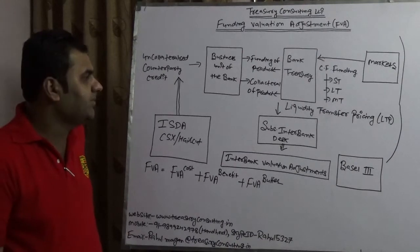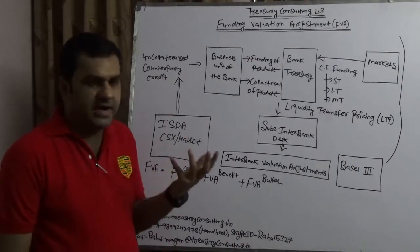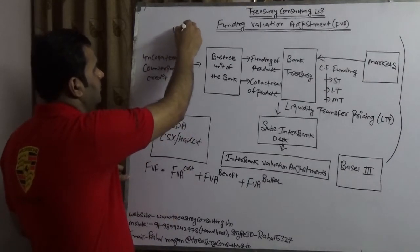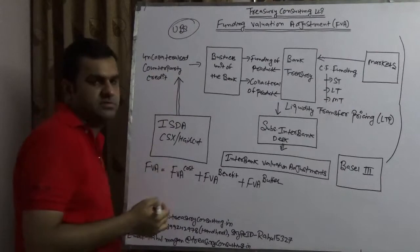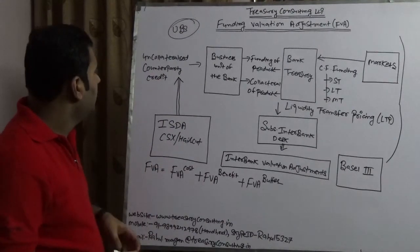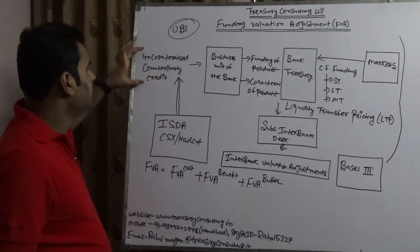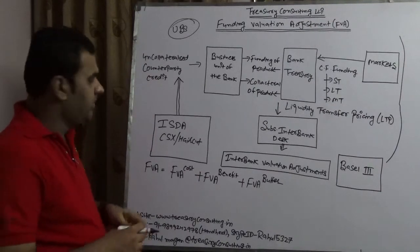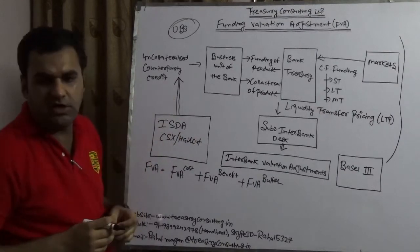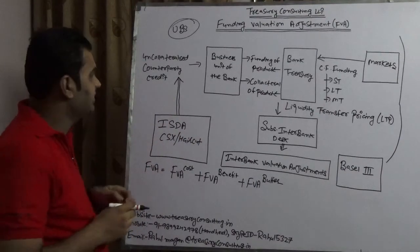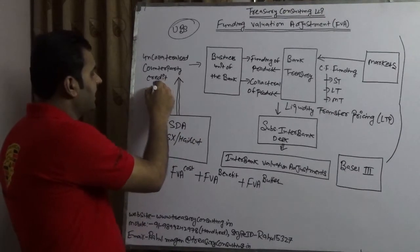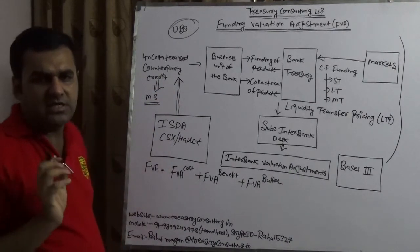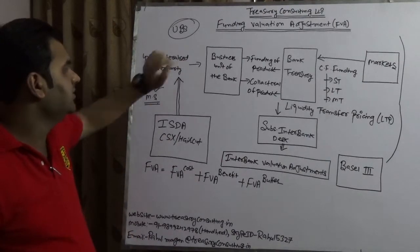We are taking an example of a treasury of a bank. Let's assume that the bank name is UBS, United Bank of Switzerland. Now UBS is having a client who is an uncollateralized counterparty. Assuming the name of the client is Microsoft.